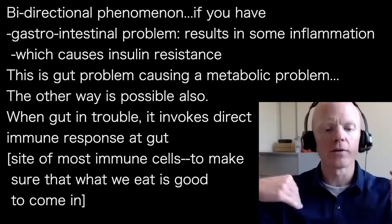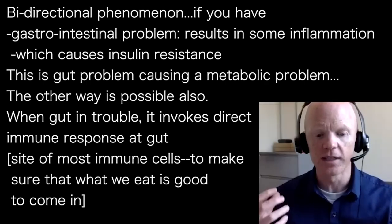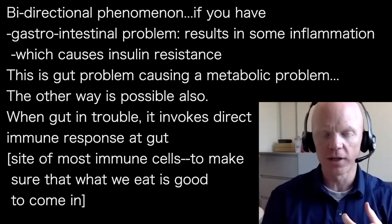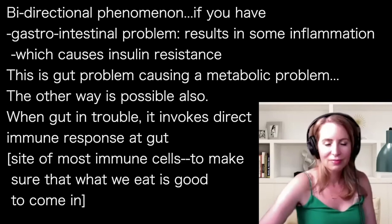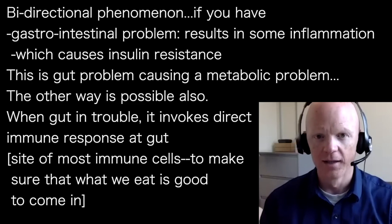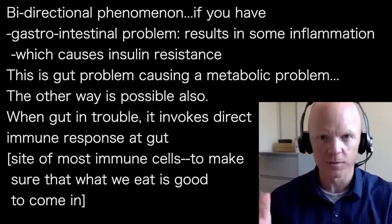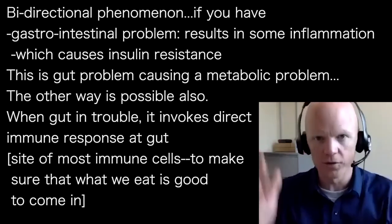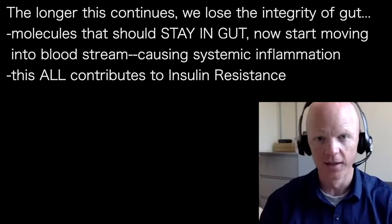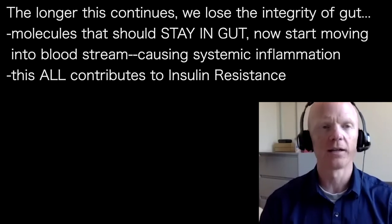The gut-to-metabolic direction is obvious, and it's usually through inflammation. When the gut is compromised, it invokes a direct immune response at the gut, because that is the single site with more immune cells than anywhere else in the whole body — this site of interaction between what we've ingested and it now coming into the body. No surprise that we have a huge wall almost of immune cells to make sure that whatever's coming in is supposed to be coming in. So a gut problem often will result in an inflammation problem.